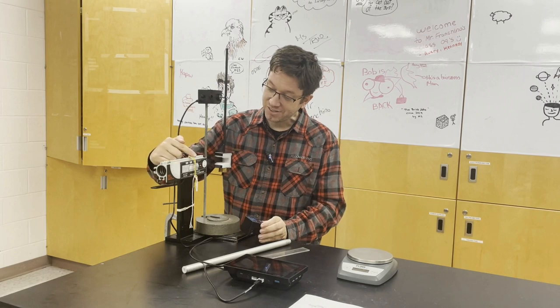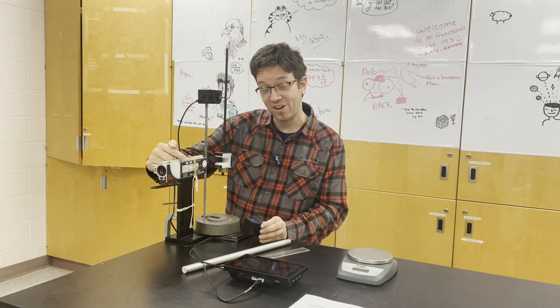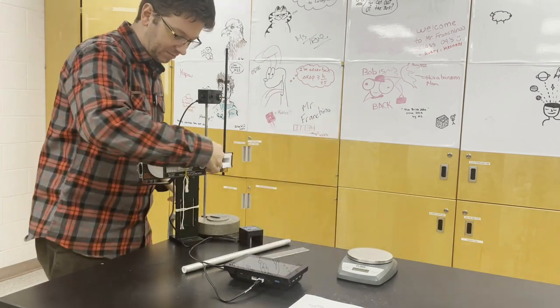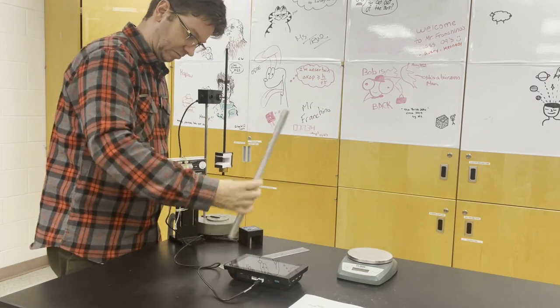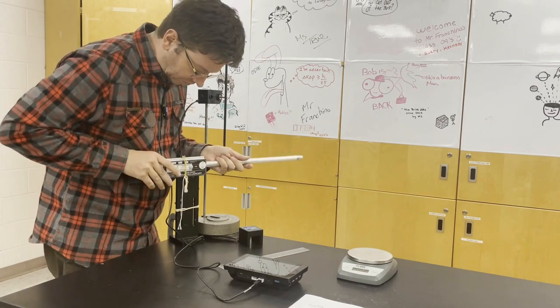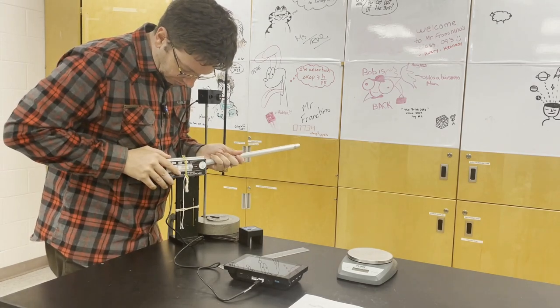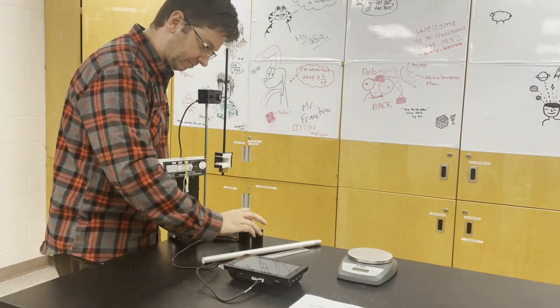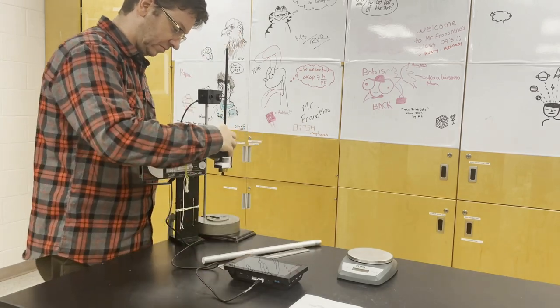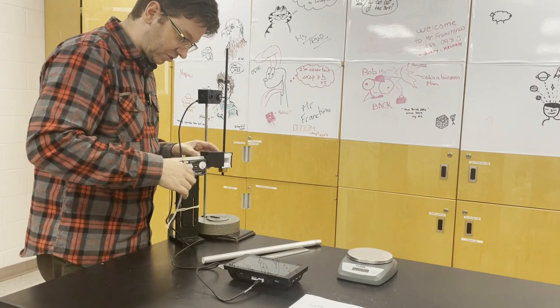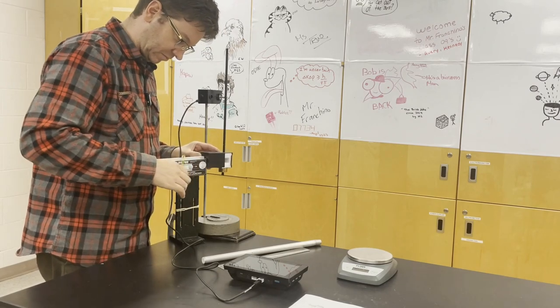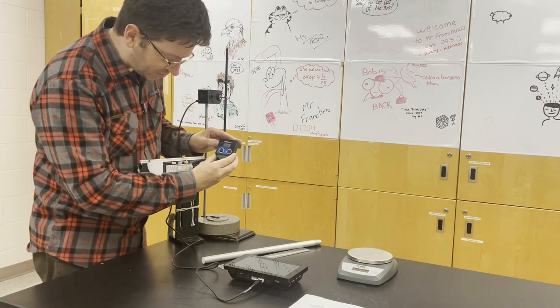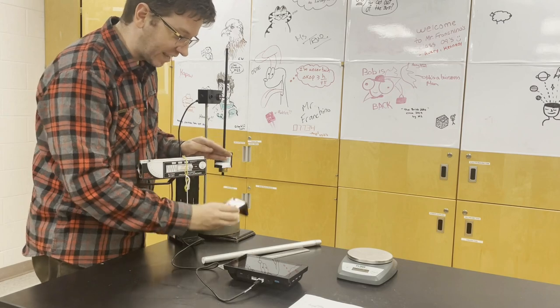Now our projectile launcher has three ranges: short, medium, and long. So we're going to do this three times, once for each. Let's start. So we're going to start with the short range. The short range has a speed of 3.38 meters per second.